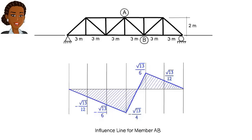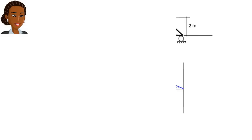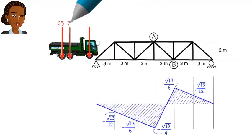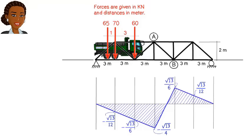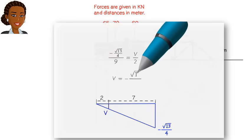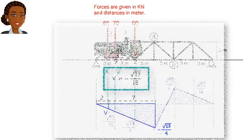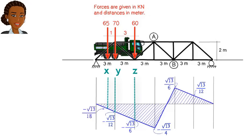We are now in a position to determine the maximum effect that the moving load series would have on member AB. Let's start by assuming that the truck is at this position on the bridge. This means the three concentrated loads are bearing down on the truss here, here, and here. Let's refer to these points as x, y, and z. The value of the influence line at y and z are already known, and we can determine the value at x using simple geometry, like this. But what do these values represent?